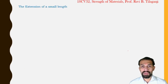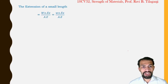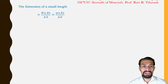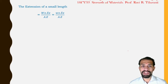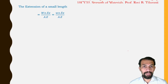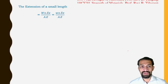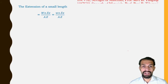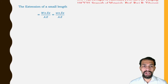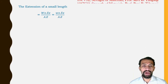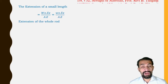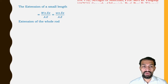The extension of a small length is capital W·x · delta x divided by A·E. This uses the formula P·L / A·E, where P is W·x, L is delta x, area is capital A, and E is Young's modulus. We can rewrite capital W·x as small w·x, so the extension becomes w·x · delta x / (A·E).